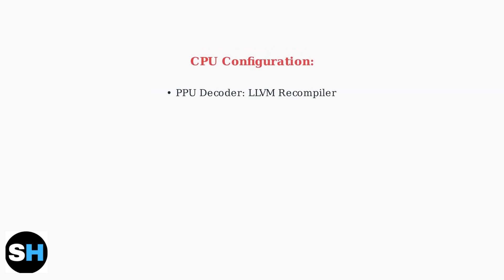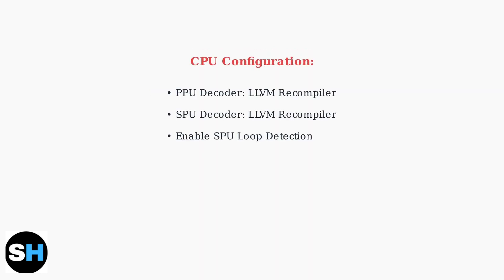Now let's configure the emulator settings. In the CPU settings, set the recompiler to LLVM for both PPU and SPU decoders, and make sure to enable SPU loop detection for better performance.